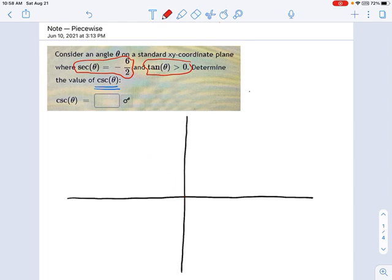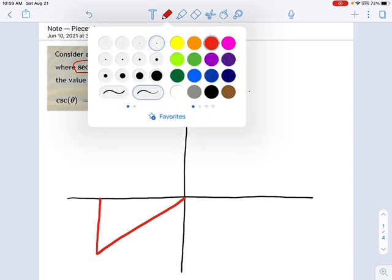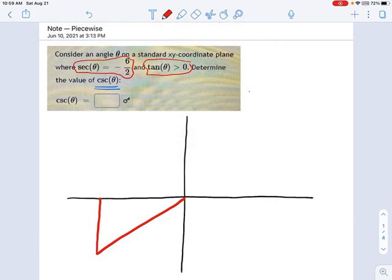I know I'm in quadrant 3, so let's draw a triangle in quadrant 3. It does not need to be an accurate triangle, it just needs to be in the right quadrant. So here's my right triangle, and here's my angle theta, which I don't know what that is, and I probably won't figure that out. But look at what we're told.